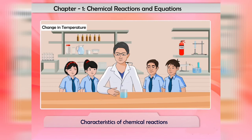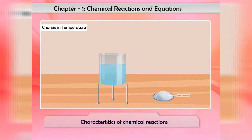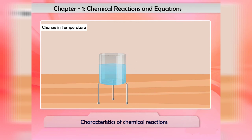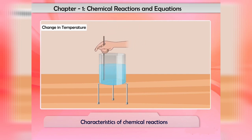When barium hydroxide is added to ammonium chloride and mixed with a glass rod, barium chloride, ammonia, and water are formed. A lot of heat energy is absorbed, due to which the reaction mixture becomes very cold. This is an endothermic reaction, which means a heat-absorbing reaction.